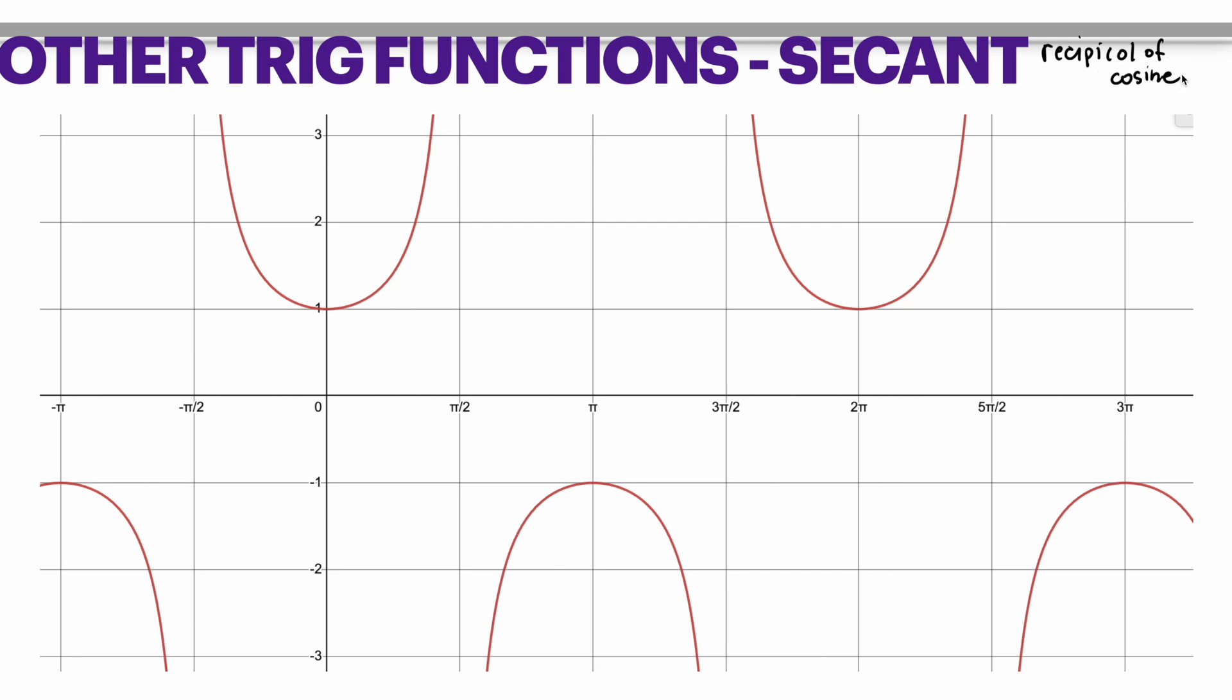Interestingly enough, if you were to graph the cosine function, the parent cosine function is this dotted black line. Same thing if you were to go the opposite direction. What secant does is it creates what looks like parabolas from the highest and lowest points.